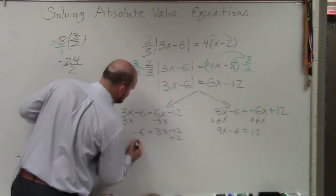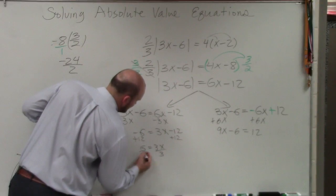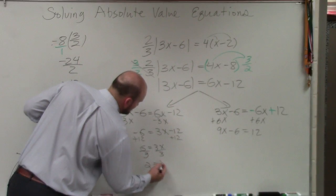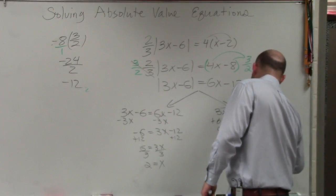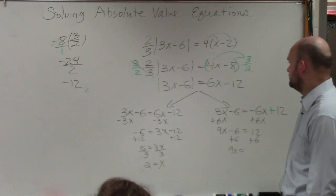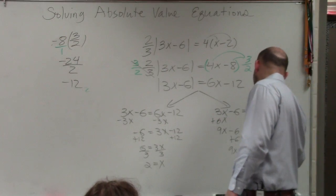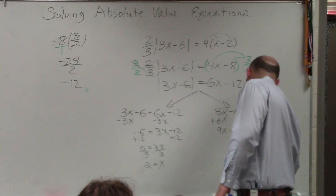So let's add 12. Add 12, 6 equals 3x, divide by 3, divide by 3, 2 equals x. Over here, add 6, add 6, 9x. Am I getting 2 twice? This, dang it, divide by 9, x equals 2.